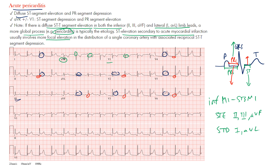In a STEMI you'd see reciprocal ST depression in the lateral leads such as lead 1 and AVL, or vice versa for a lateral MI. But in pericarditis, notice that we see ST elevation in the lateral leads, the inferior leads, and the anterolateral leads. With that diffuse ST segment elevation throughout the whole EKG and the characteristic presentation, pericarditis is most likely.